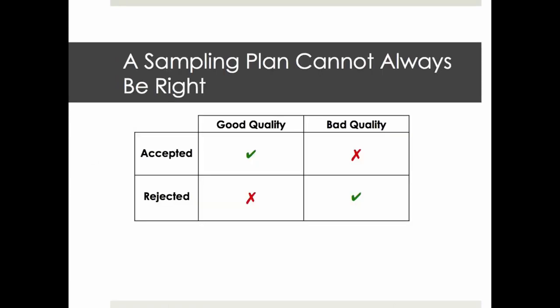It's used for inspections based on random sampling. So there's always a risk of making a mistake because we only take a decision based on what we found on the sample, not on the whole batch. If it's good quality and we accept — good. If it's bad quality and we reject — good. But what about the other cases? There are risks here.